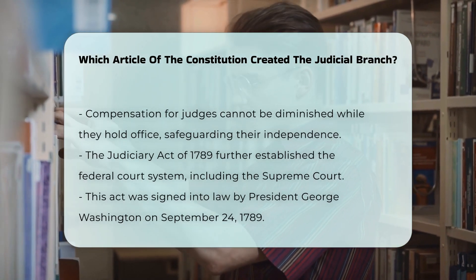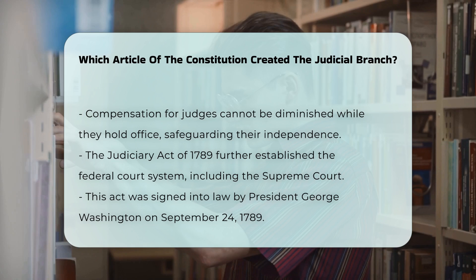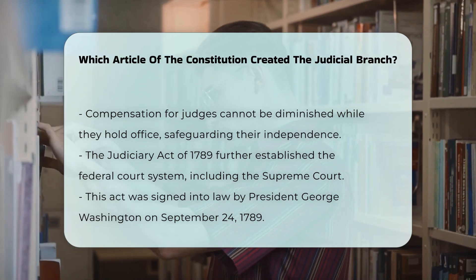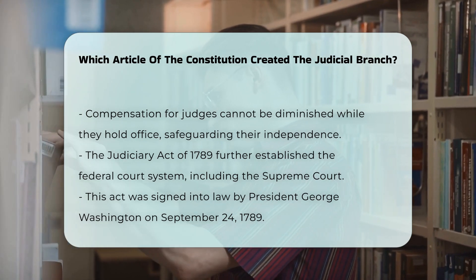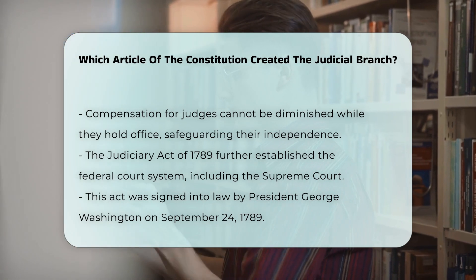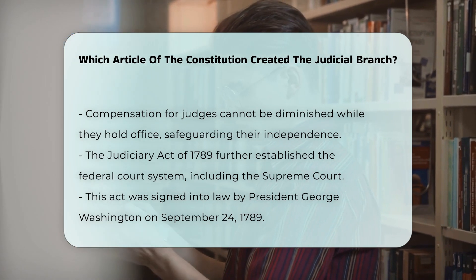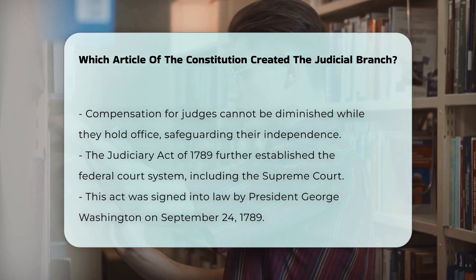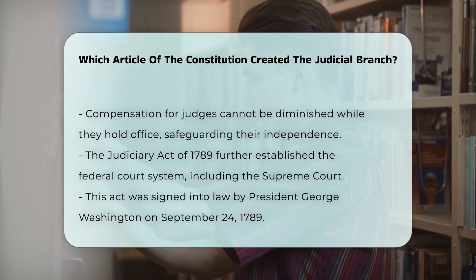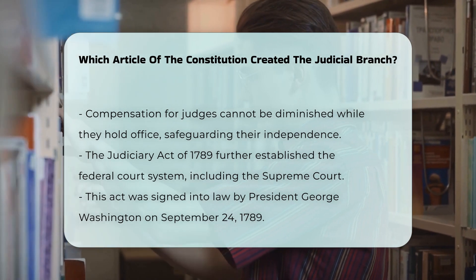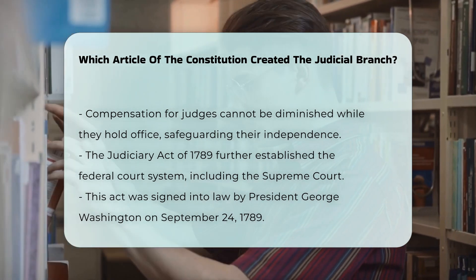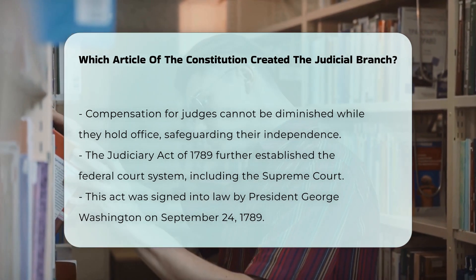The establishment of the federal court system, including the Supreme Court, was further detailed in the Judiciary Act of 1789, which was one of the first acts of the first Congress. This act was signed into law by President George Washington on September 24th, 1789.